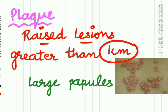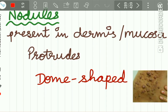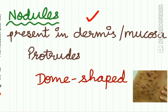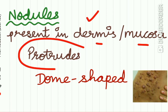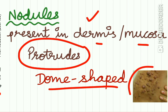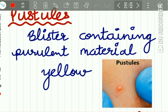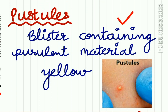Plaques are sometimes called large papules. A nodule is present in the dermis or mucosa, protrudes outward, and is mostly dome-shaped — you can see multiple dome-shaped raised nodules in the illustration. A pustule, as the name indicates, contains pus; it is a blister containing purulent yellow material.